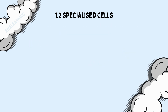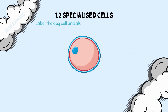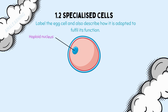The most common questions linked to egg cells will either ask you to label the egg cell, or describe how it is adapted to fulfil its function. It has a haploid nucleus, meaning it has half of the necessary chromosomes. Once the egg and sperm cell nuclei are combined — in other words, fertilisation has occurred — a diploid cell is formed. This diploid cell then starts to multiply and eventually becomes the baby or offspring.